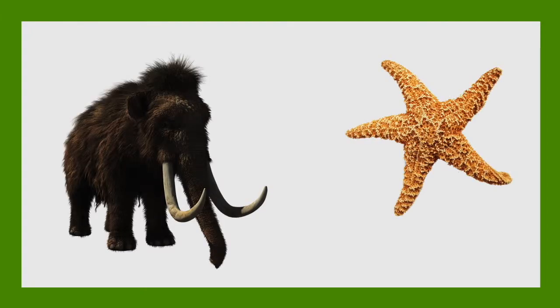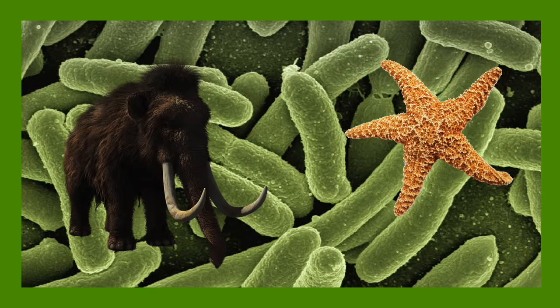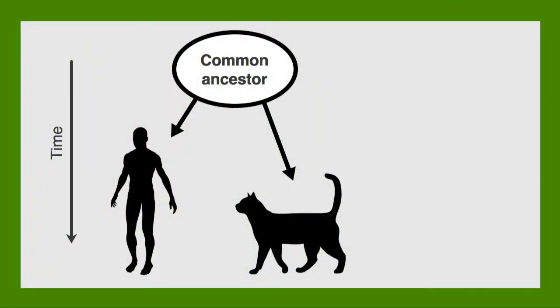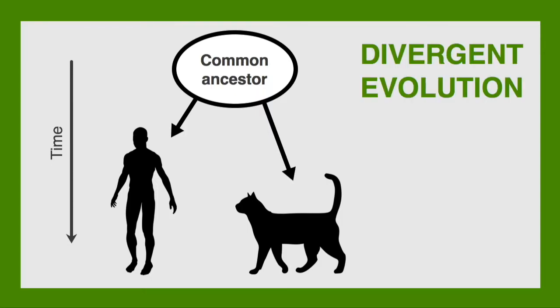Did you know that you are related to a mammoth, a starfish, and even bacteria? You are linked with every other organism on Earth, and those links run billions of years into the geological past. Every species on this wonderful world is interconnected. You can pick any two species on the planet and find that they have a common ancestor. That ancestor may have lived millions or billions of years in the past, and the species we see today have spent all that time developing and diversifying. This is known as Divergent Evolution.